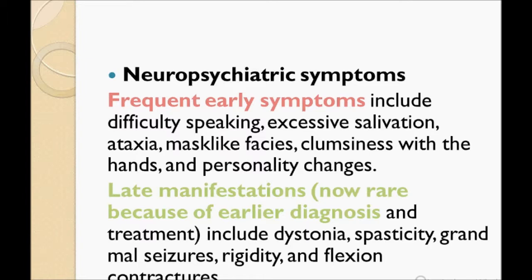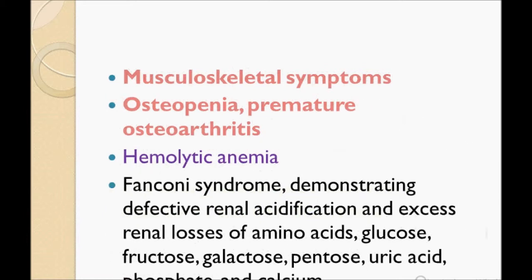This affects the CNS. Musculoskeletal symptoms include osteopenia and premature osteoarthritis. Sometimes it is presented as a visual disease and they will ask which of the following could be seen — remember osteopenia. A very important point: hemolytic anemia. You need to remember which type of anemia you can see in Wilson's disease — it is hemolytic anemia.